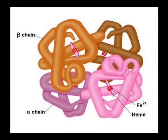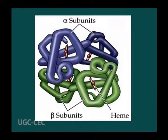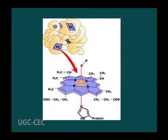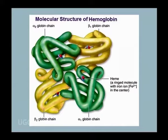In most vertebrates, the hemoglobin molecule is an assembly of four globular protein subunits. Each subunit is composed of a protein chain tightly associated with a non-protein heme group. Each protein chain arranges into a set of alpha helices forming a pocket that strongly binds the heme group. This heme group consists of an iron ion held in a heterocyclic ring known as the porphyrin ring. In adult humans, the most common hemoglobin type is a tetramer called hemoglobin A, consisting of two alpha and two beta subunits. The alpha subunit is 141 amino acids long, while the beta subunit is 146 amino acids long, denoted as alpha-2 beta-2 chain.